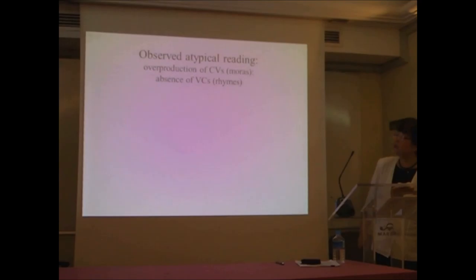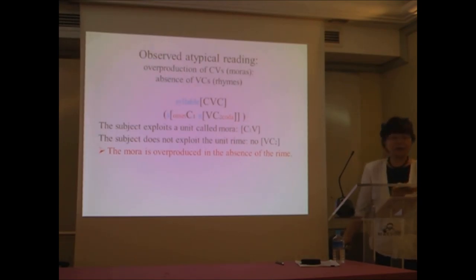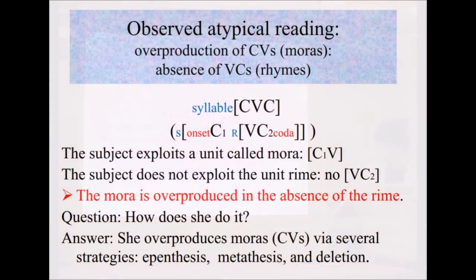So observed atypical reading is the following. The characteristic is she overproduces CV units and absolutely no rhymes. And this is so un-English. So this is the standard syllable structure. And the proper boundary goes C consonant and VC rhyme in English. The subject exploits the unit called mora. So this portion, CV. But the subject does not exploit the unit rhyme. So there is no rhyme units. I will be showing it very shortly. So the mora is overproduced in the absence of the rhyme.